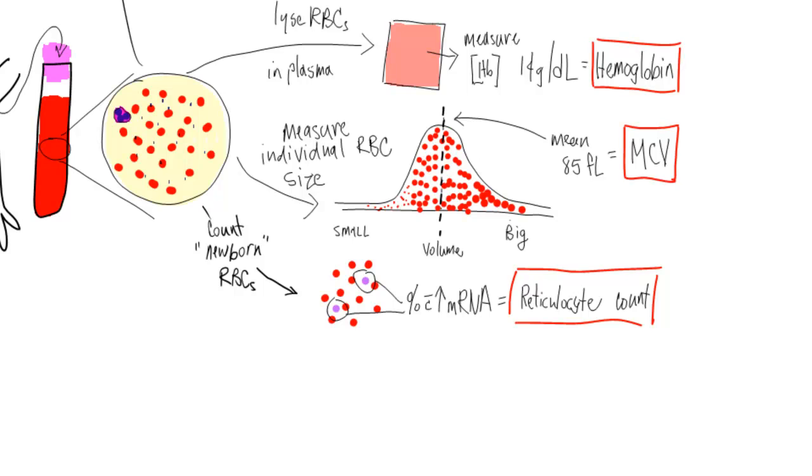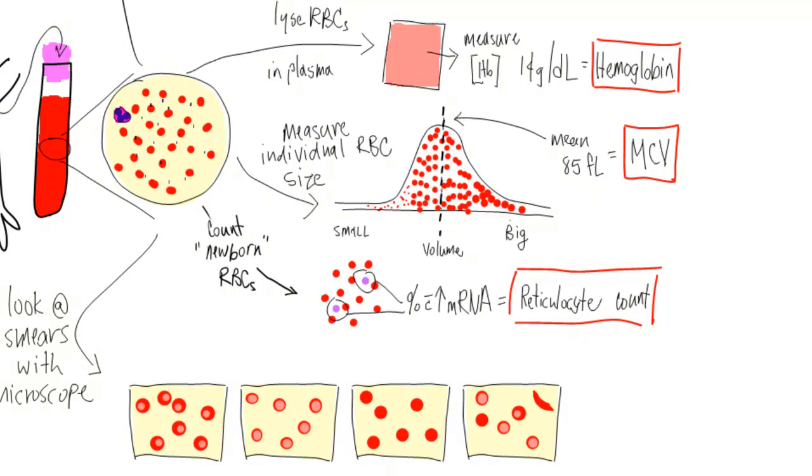The next step is to look at the blood in the microscope. Many anemias have characteristic findings on peripheral smear. For example, the red cell morphology may look normal, hypochromic, spherocytic, or have sickle forms.